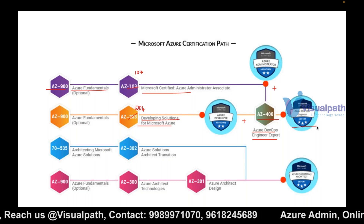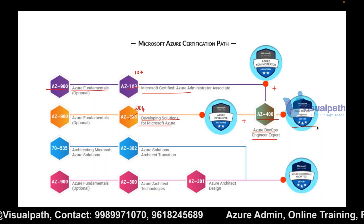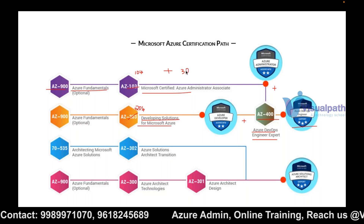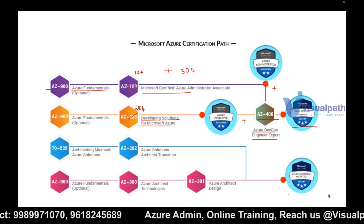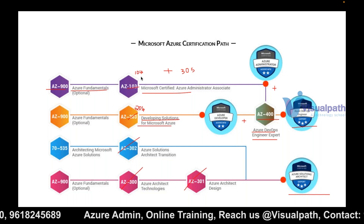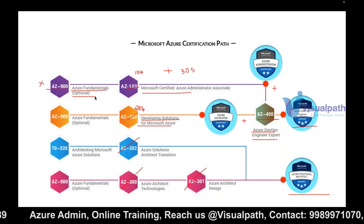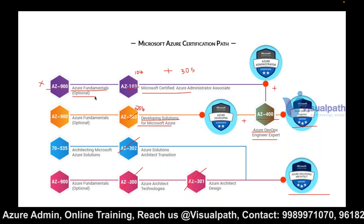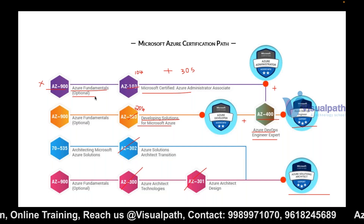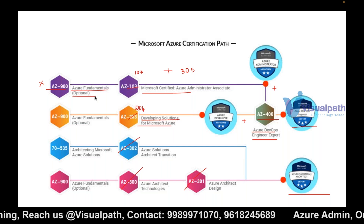For the next level — Azure Solutions Architect Expert — you can learn AZ-104 plus AZ-305. Regarding AZ-900: it is not mandatory to take AZ-900 before AZ-104; it's optional. The required fundamentals knowledge will be covered within our AZ-104 training, so effectively you'll get AZ-900 plus AZ-104 knowledge in this course.